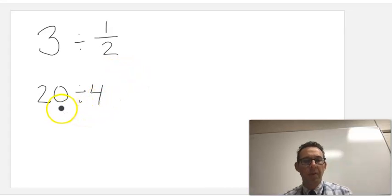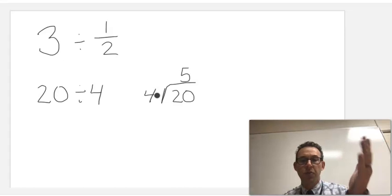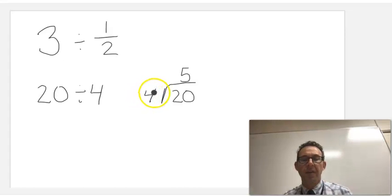For example, 20 divided by 4 we often rewrite as 20 divided by 4 written this way, and we ask, how many times does 4 go into 20? 4 goes into 20 five times, because if I count by 4s, I go 4, 8, 12, 16, 20, and I can see that 4 goes into 20 five times.